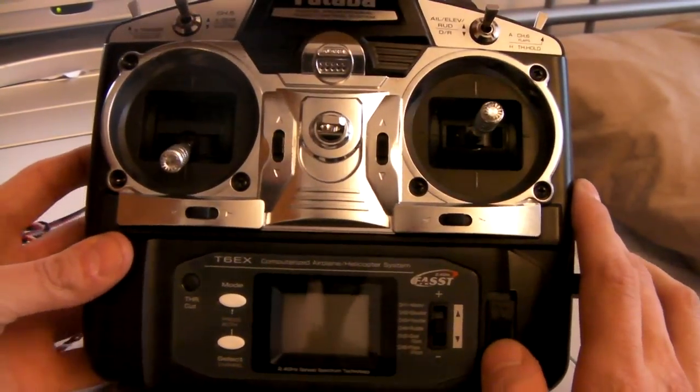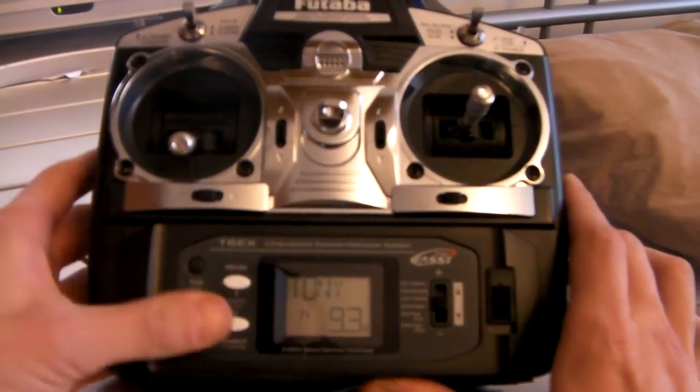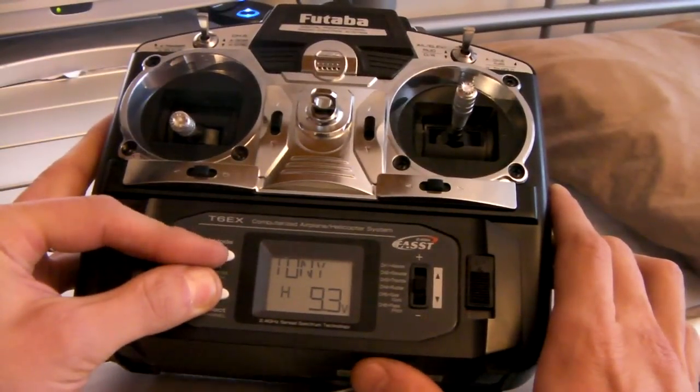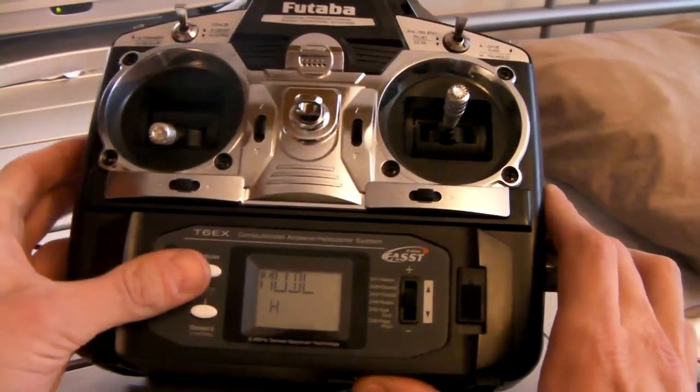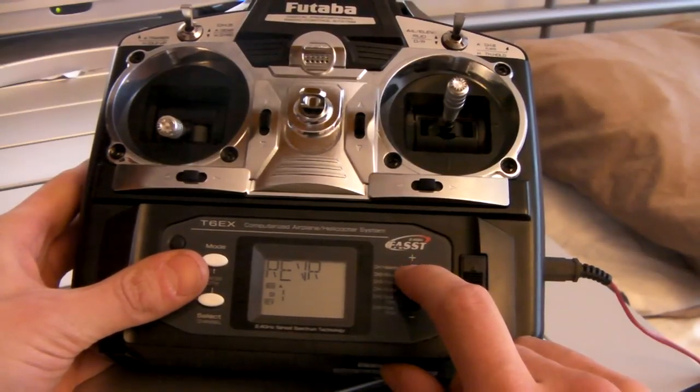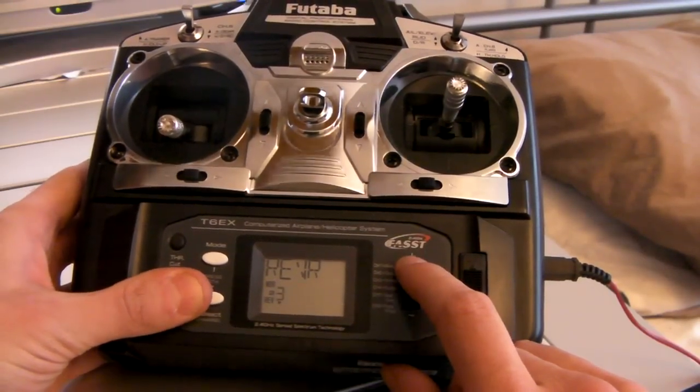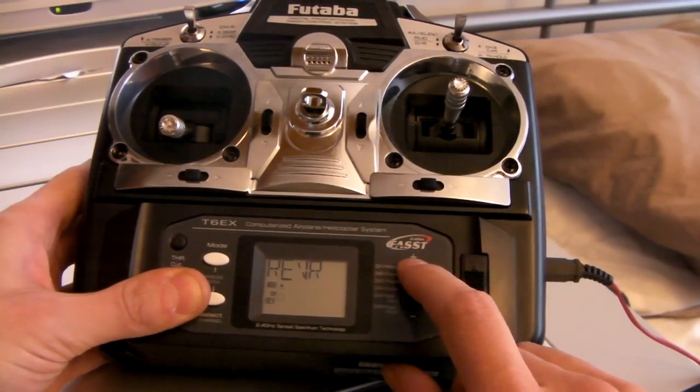Turn that on and go into the menu, then go to the reverse menu. Channel 1, reverse that. Channel 2, reverse that too. Channel 6, reverse that—which is the aileron, elevator, and pitch channel. All of them will be reversed.